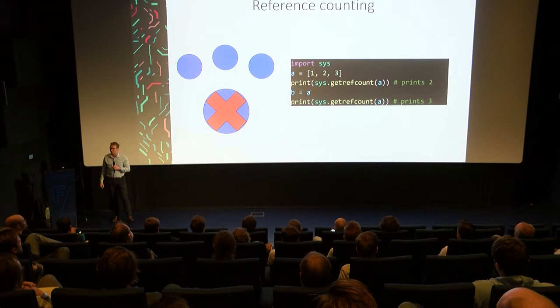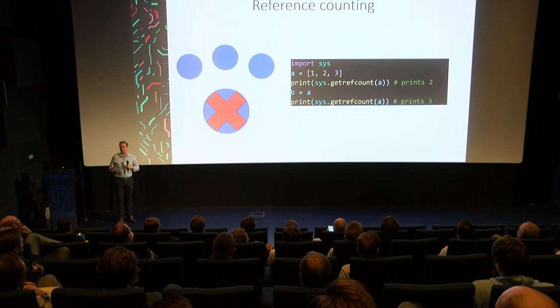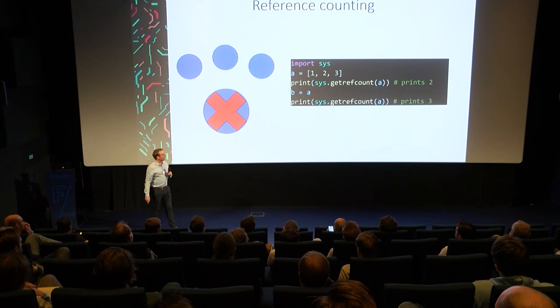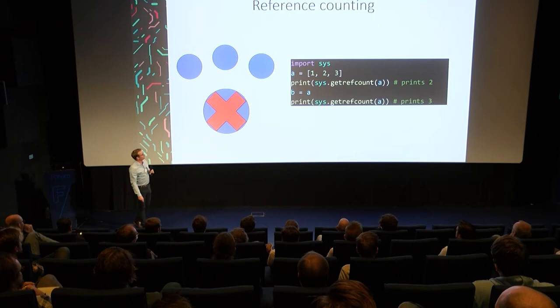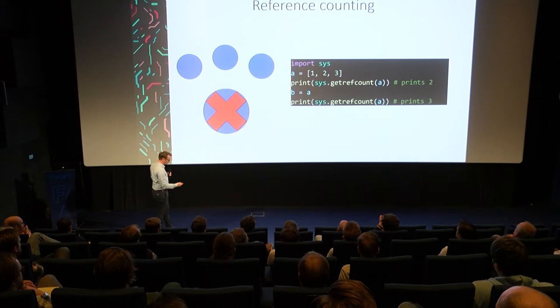You can actually look at the reference count from within Python. If you import the sys module and call sys.getrefcount(), you can see the reference count of certain Python objects, and you'll find some interesting quirks. For example, the first few integers in Python are actually globals, so they have a ridiculously high reference count shared across your entire program. If you have a list of a couple of values and call getrefcount(), it prints two — because the reference count is one when you create the list, but passing it to a function also increments it by one. If you assign it to another variable, it prints three, because two variable names point to that same Python object.